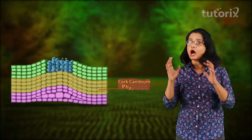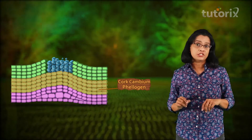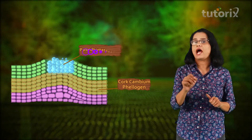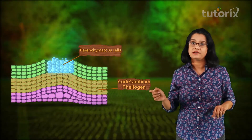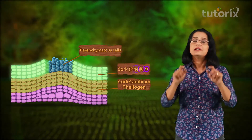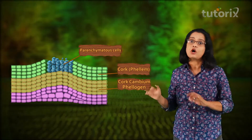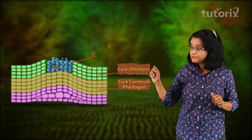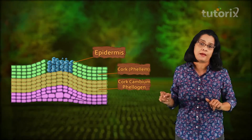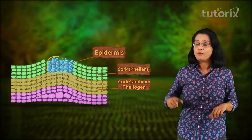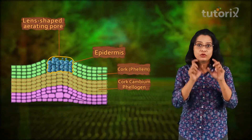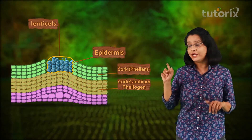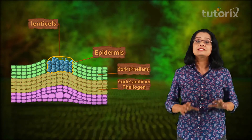At some regions, phelogen cuts off a mass of parenchymatous cells on the outer side instead of cork cells. This mass of parenchymatous cells soon ruptures the epidermis of the stem, forming a lens-shaped aerating pore.